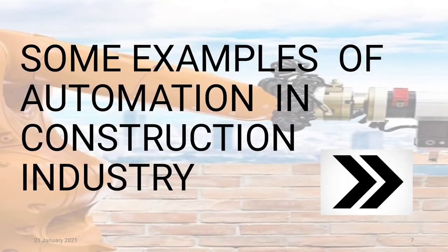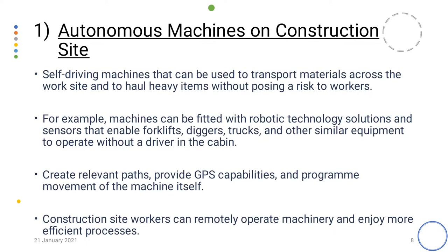Now let us see some examples of automation in construction industry. First, autonomous machines on construction sites. Self-driving machines can be used to transport materials across the work site and haul heavy items without posing a risk to workers. Machines can be fitted with robotic technology solutions and sensors that enable forklifts for lifting, diggers for digging, trucks for carrying or transporting materials, and other equipment to operate without a driver in the cabin. Autonomous machines also provide GPS capabilities and program movement of the machine itself, so construction site workers can remotely operate machinery and enjoy more efficient processes.